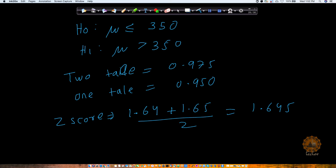So let's say I have this null hypothesis which states that μ is less than or equal to 350, and my alternative hypothesis will be μ greater than 350.